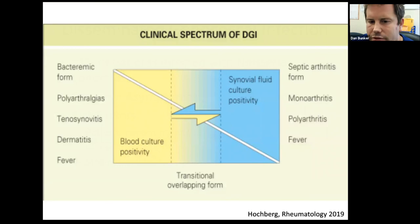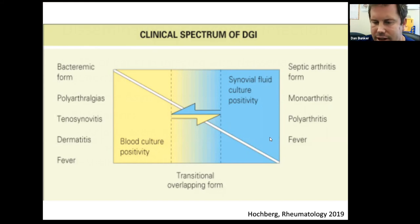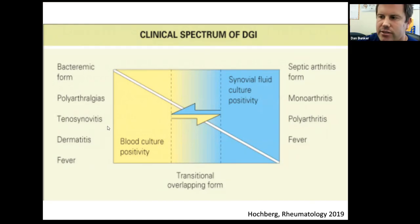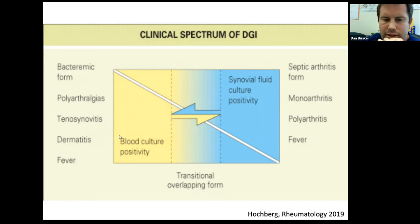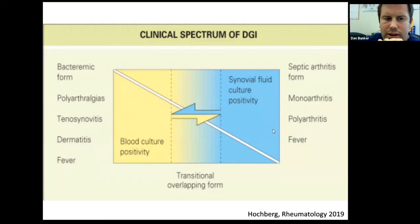Disseminated gonococcal infection can take two forms. One is more classic: a septic arthritis with a knee effusion. The other — the more bacteremic form — presents with polyarticular disease, tenosynovitis, and dermatitis with purpuric lesions and fevers. These are kind of two phenotypes of disseminated gonococcal infection.